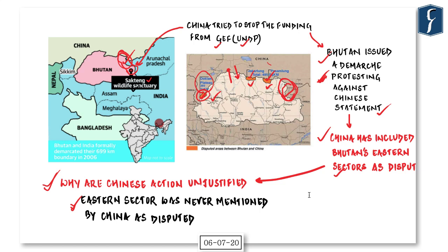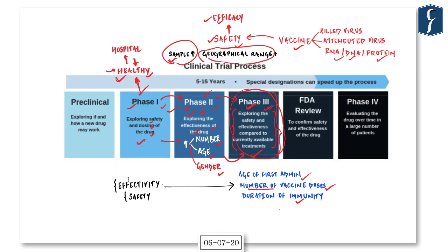In the Bhutan-China discussion, remember the location of the Sakteng Wildlife Sanctuary, as it can be directly asked in prelims. For the vaccine trial phases: Phase 1 deals with safety, Phase 2 is mainly focused on efficacy, and Phase 3 trials address both safety and efficacy concerns.